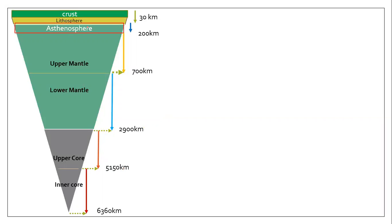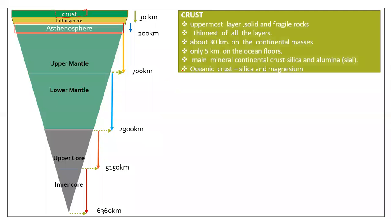From our sources, we have found basically three types of layers. First is the crust, second is the mantle, and third is the core. The first layer, the crust, is the upper sphere — the uppermost layer. It is solid, but it can be a fragile rock that can be easily broken.